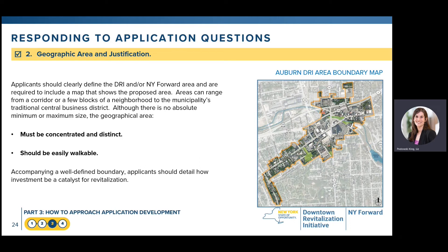Every application must define its DRI or New York Forward area and show it on a map with the proposed boundary. This boundary has some flexibility and may be further refined if your application is selected for funding. The geographic area can range from a corridor or a few blocks to the entirety of a traditional central business district. There are no absolute minimum or maximum sizes, but a successful boundary will be concentrated and easily walkable. Applicants should also provide a short narrative describing how investment within this concentrated area will help to catalyze new investment and revitalization in the future.